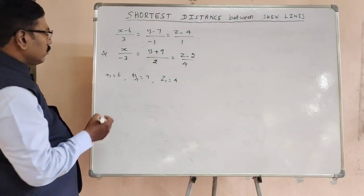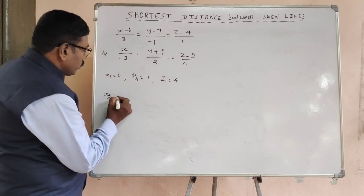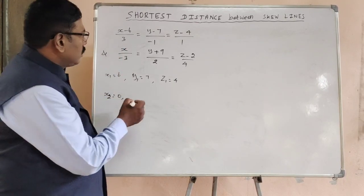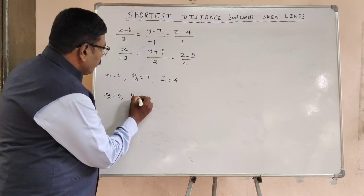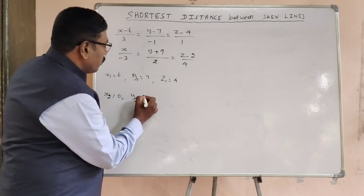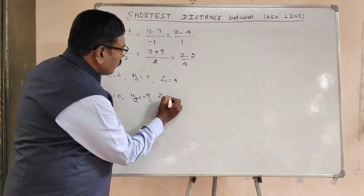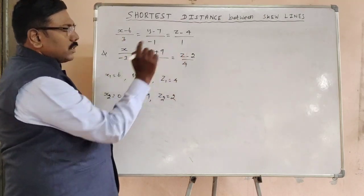Now for the second line, x2 equals, here no term, so let's take it as 0. And y2, here y minus of minus 9, so minus 9. And z2 equals 2.